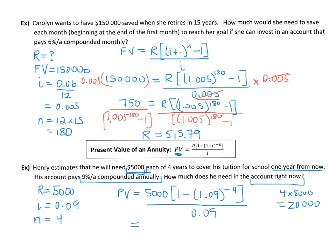So I'm going to do inside the bracket first here. One take away 1.09 to the exponent negative four. So that gives me 0.291574 blah blah blah. Times that by 5,000 and then divide that amount by 0.09.